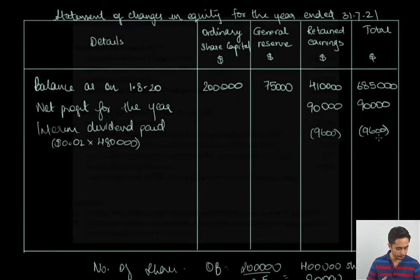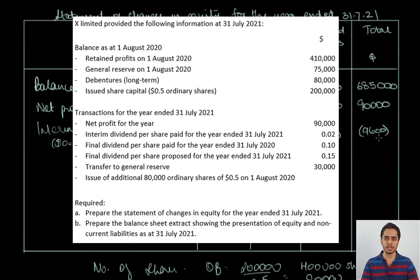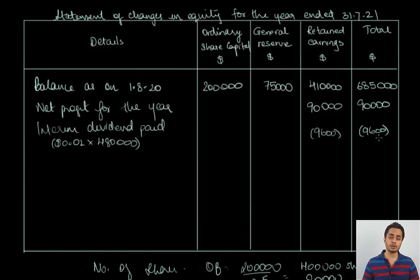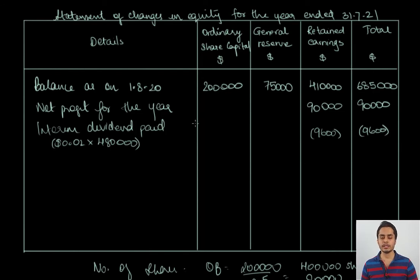Then we have the final dividend per share paid in the current year for the previous financial year. The final dividend is always recorded in the year of payment — it belongs to the previous year but was not recorded when proposed; it is recorded in the current year when actually paid. The dividend per share is $0.1, and the number of shares is 400,000 — not 480,000 — because the 80,000 shares were not issued in the previous financial year. So the final dividend paid is $0.1 × 400,000 = $40,000, deducted from retained earnings and the total column.